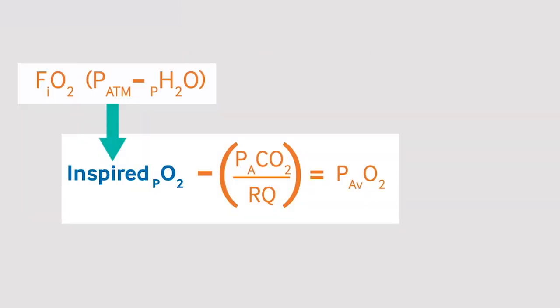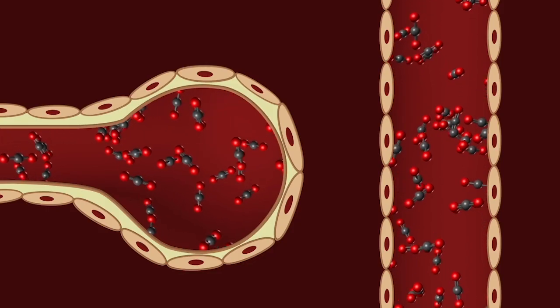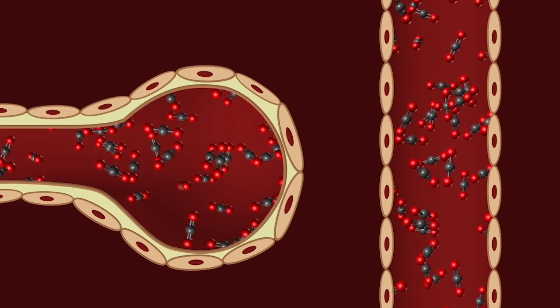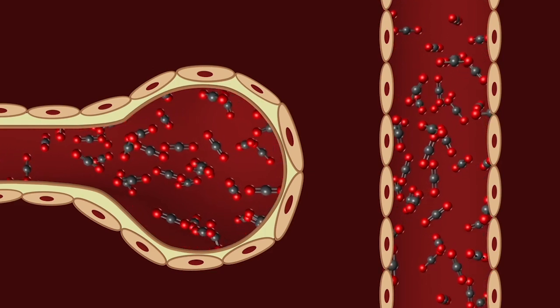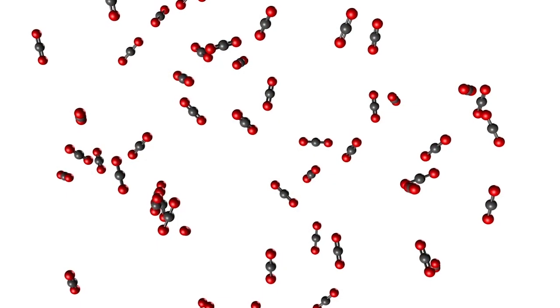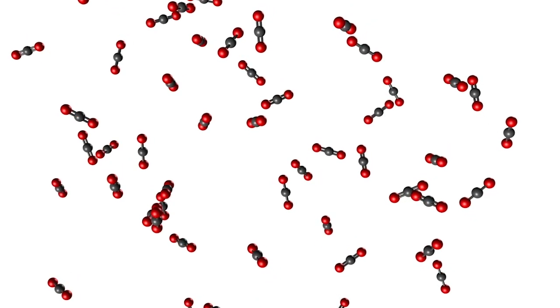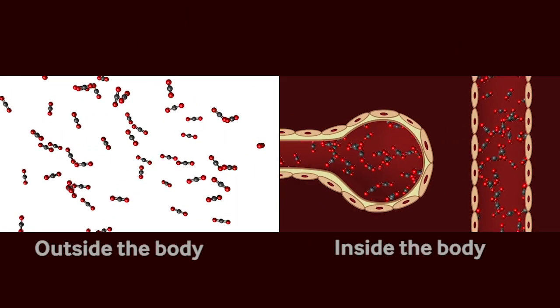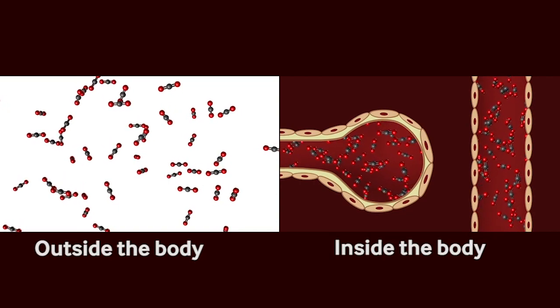To calculate the alveolar partial pressure of oxygen, you simply take the inspired PO2 and subtract the PCO2 divided by the respiratory quotient. The partial pressure of carbon dioxide is approximately equal between the blood and the alveoli. As this is higher than the concentration of carbon dioxide in the air outside the body, there is a further reduction in the oxygen in the alveoli.